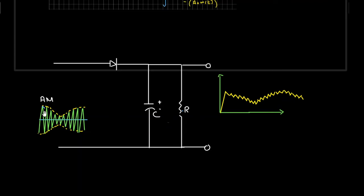As the input signal falls below the peak value, it quickly becomes less than the voltage across the capacitor. When the input voltage is less than the capacitor voltage, the diode acts as an open circuit, and the capacitor starts discharging through resistor R at a slower rate given by the time constant RC. When the amplitude modulated signal again goes to the positive peak, the charging process repeats.